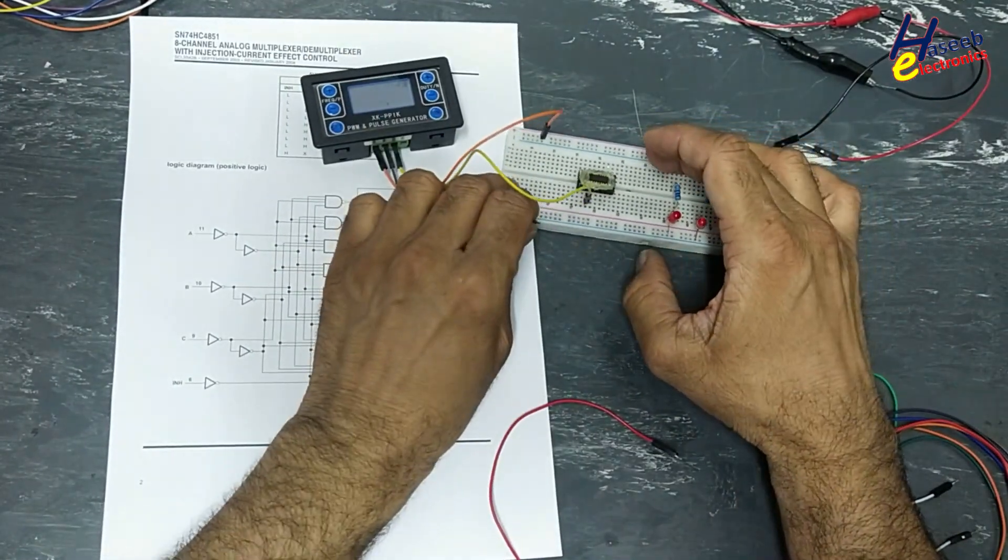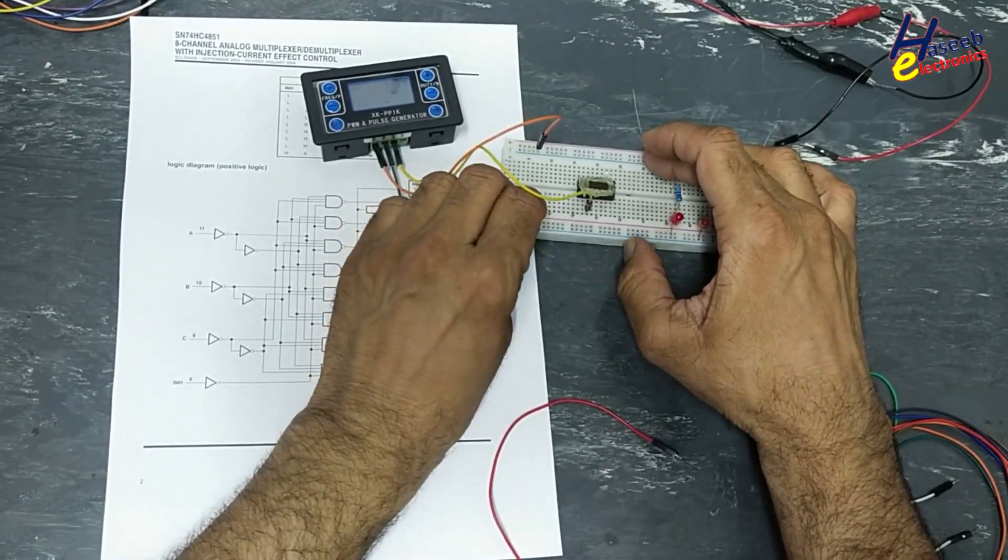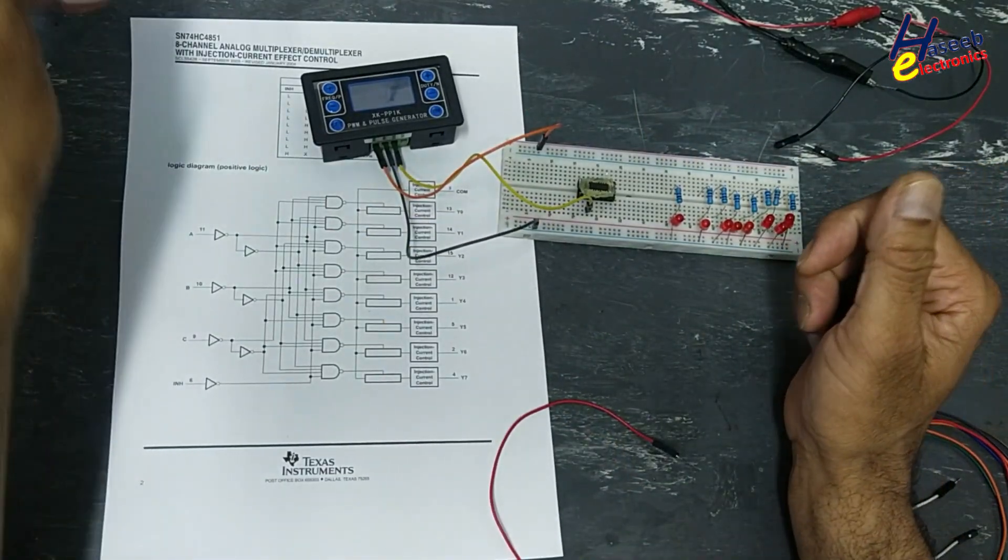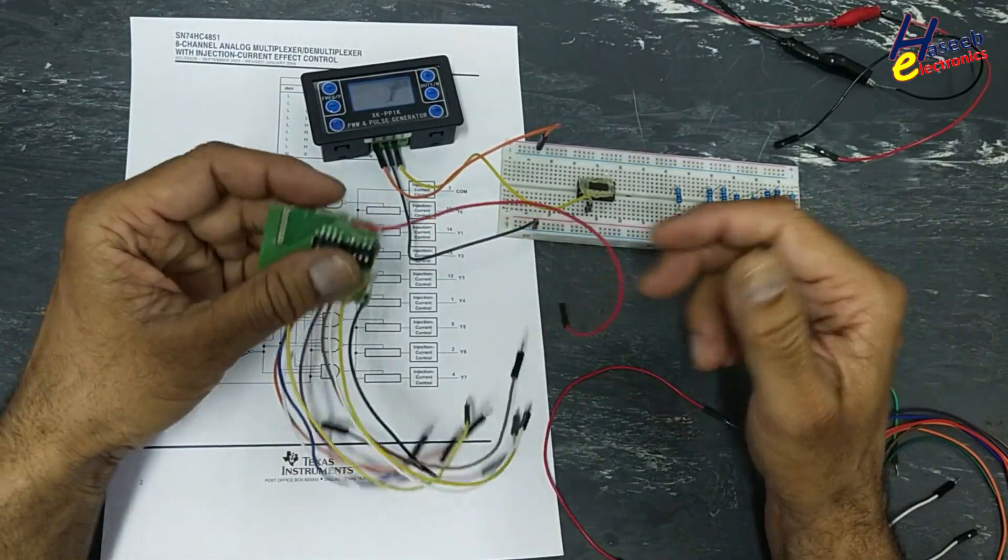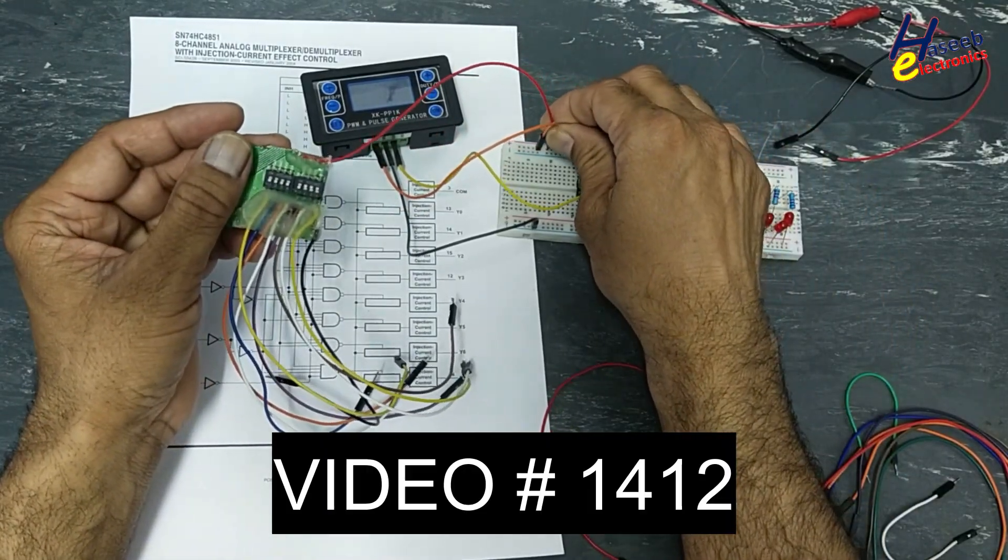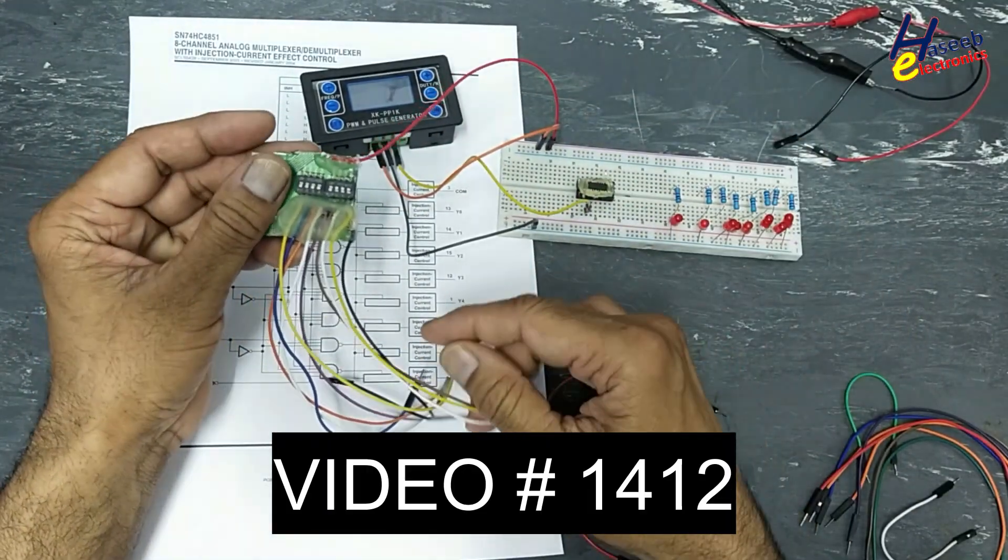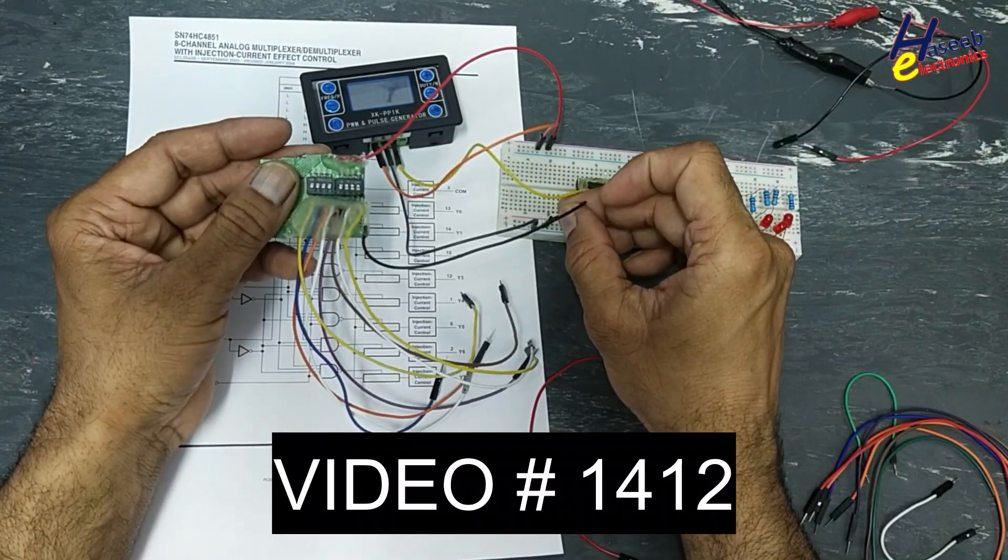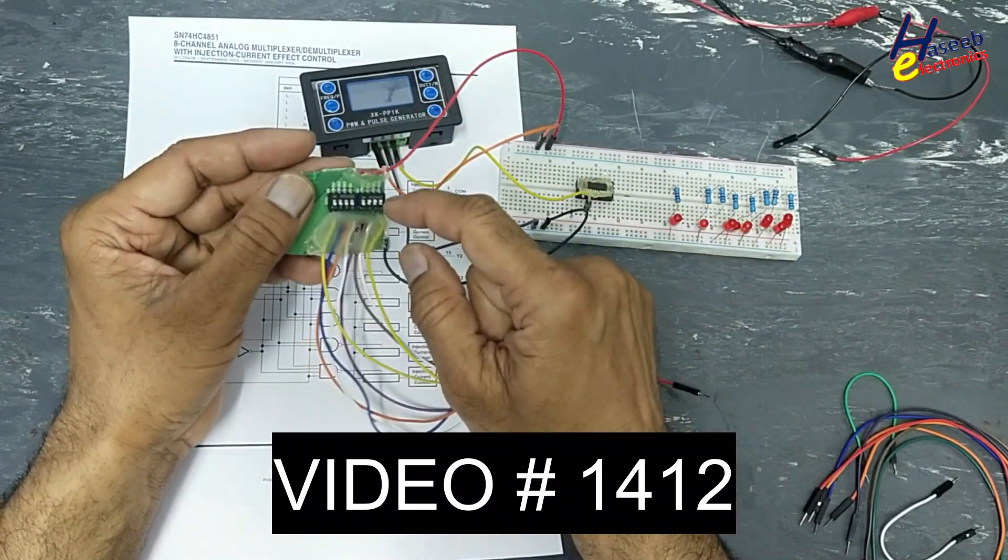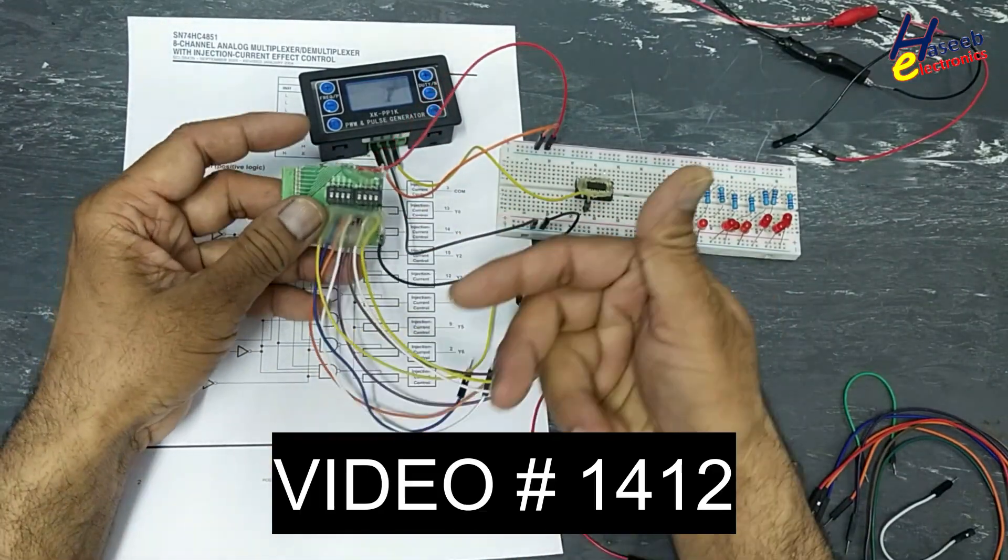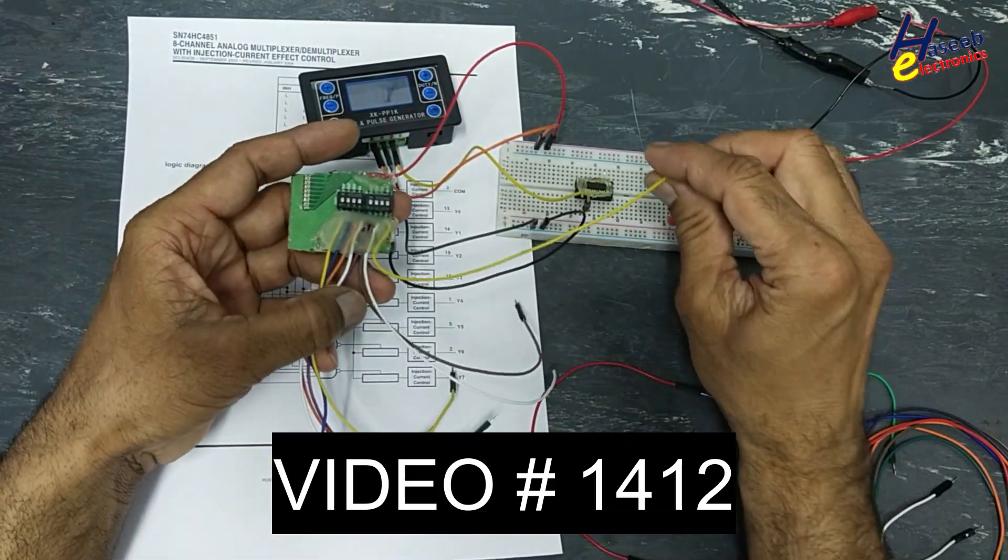You can use any manual signal. I will use this pattern generator which I showed in my last video. You can make this pattern generator very simply by using DIP switches and 3.3k resistor. You can watch the video number displayed on the screen.